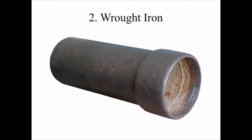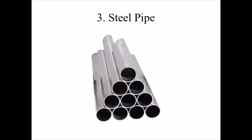Steel pipes are light and strong, able to withstand high internal pressure, and can be easily transported. However, they cannot withstand external pressure and are not suitable for distribution systems in water supply schemes. These pipes are joined by welding or riveting.